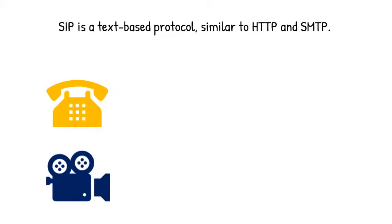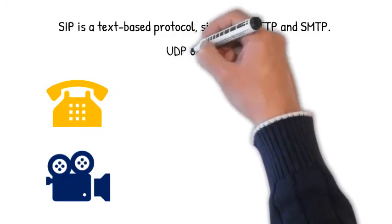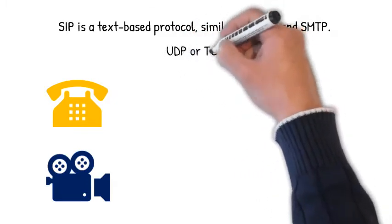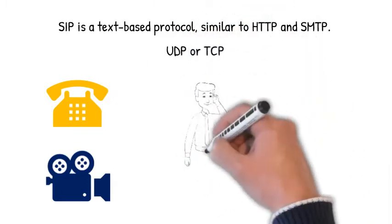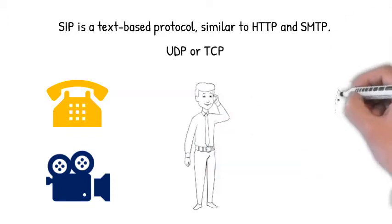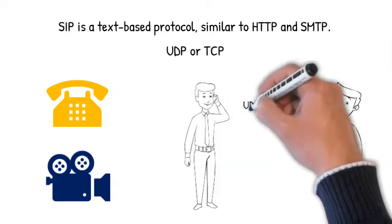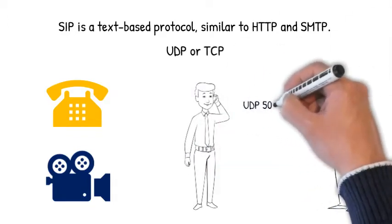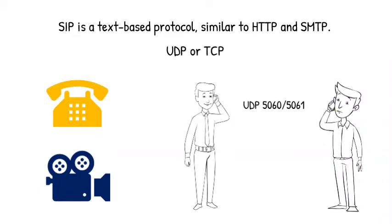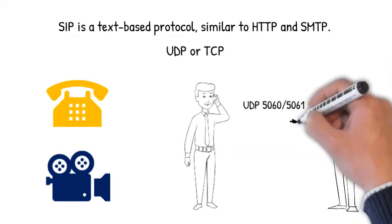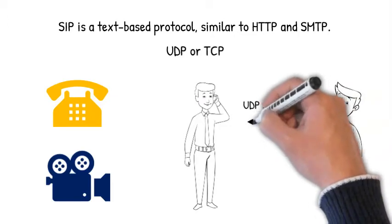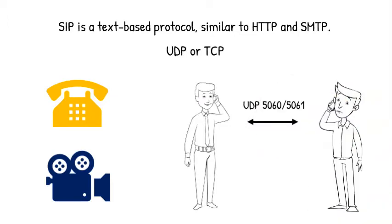SIP is a communications protocol used for signaling to control multimedia communication sessions, and it can be either UDP or TCP. SIP clients typically use UDP on port numbers 5060 or 5061 to communicate signaling information to both SIP servers and SIP endpoints.